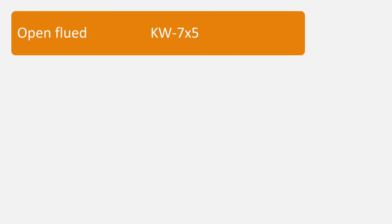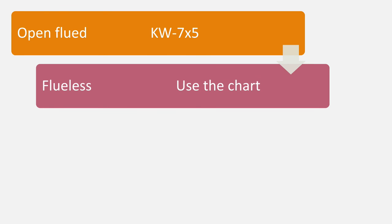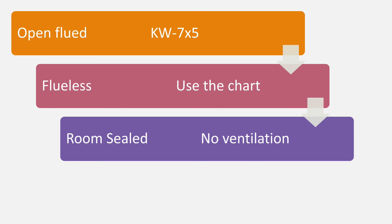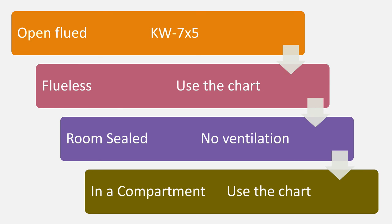So to sum everything up — four simple rules. For open flued appliances, you take the kilowatts, take away seven, and whatever you've got left you times by five; that will give you the size of your ventilation in centimeters squared. For flueless appliances, use the flueless chart. For room sealed appliances, you don't need any ventilation. And for appliances in a compartment, use the chart. Quite simple — not as complicated as you would think.